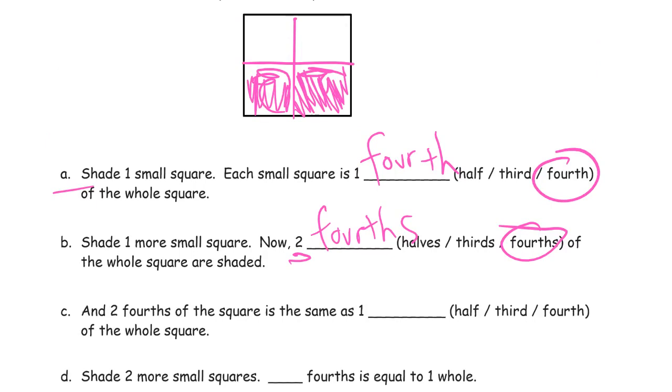Two fourths of the square is the same as one. So like if this whole thing was shaded in like that, doesn't that look like, does it look like half? Does it look like a third? Or does it look like a fourth? Well, it looks like the shaded part is equal to the unshaded part. So that would be two parts, right? Shaded. One unshaded. And they're equal. So they would be halves.